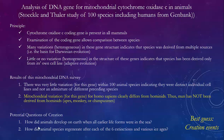Some potential questions: How did animals develop on Earth when all earlier life forms were in the sea? How did they decide to come on land? And how did all animal species regenerate after each of the six extinctions? The divisions in the timeline were based on environmental events that killed off most animal and plant species, yet they came back each time — many due to ice ages. The evidence suggests Darwinian trans-species evolution is not correct, but adaptive evolution — change within a species — is correct.